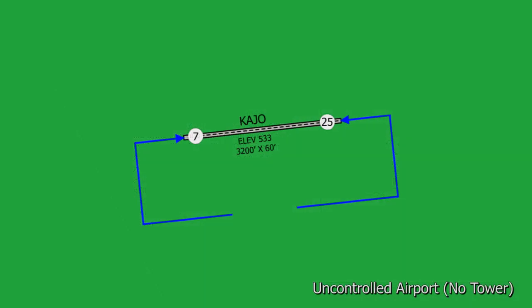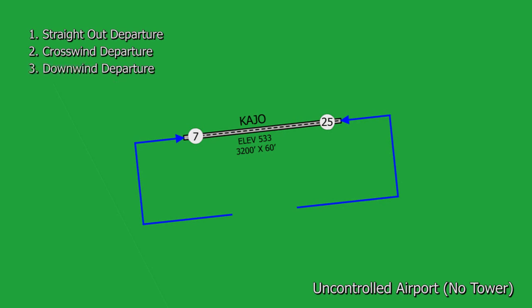When departing Corona Airport there are four different ways we can depart an uncontrolled airfield: a straight out departure, a crosswind departure, a downwind departure, and for uncontrolled airports there is something called the midfield departure procedure.